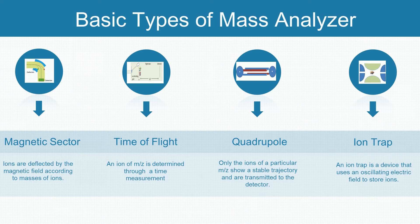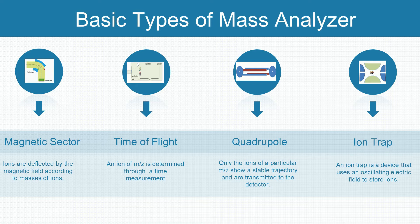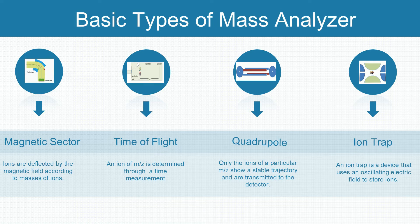The mass analyzer is the heart of the mass spectrometer. It separates them based on charge-to-mass ratios. There are several general types of mass analyzers: magnetic sector, time of flight, quadrupole, and ion trap.